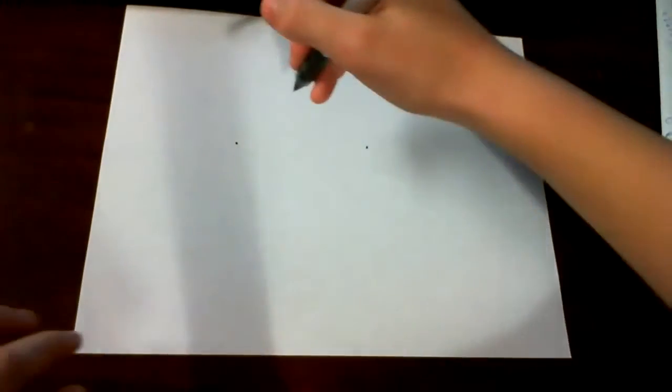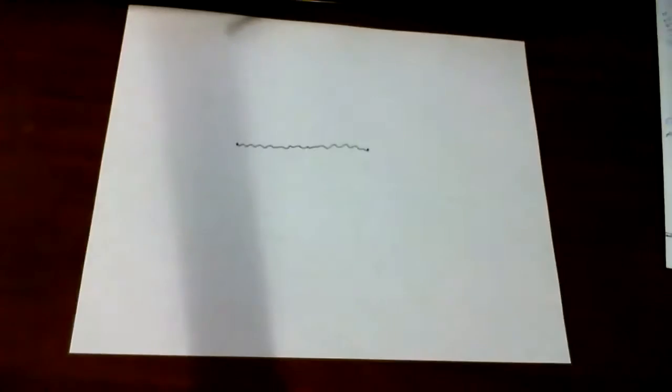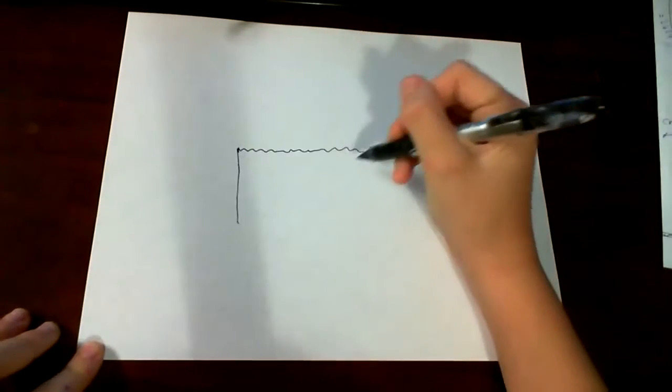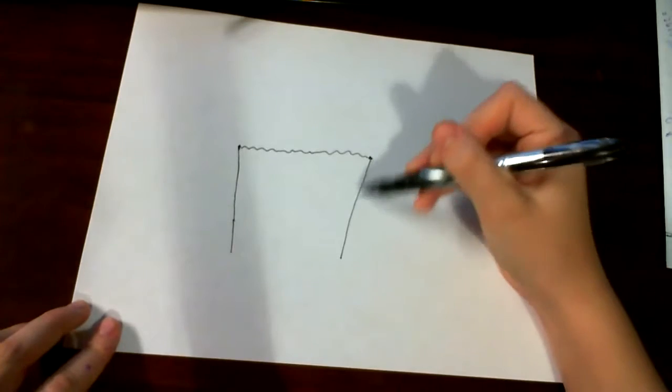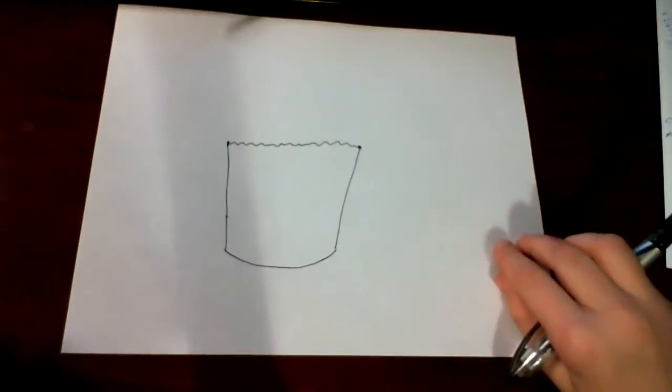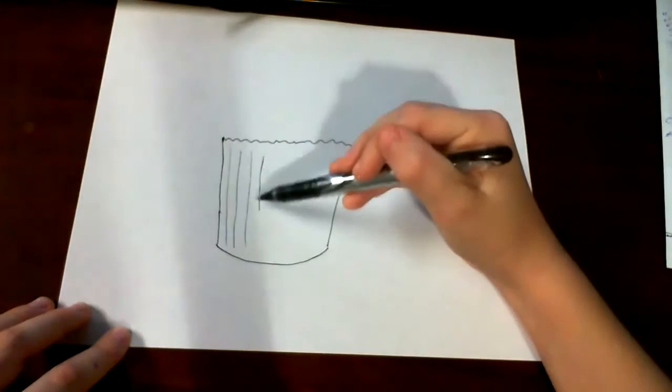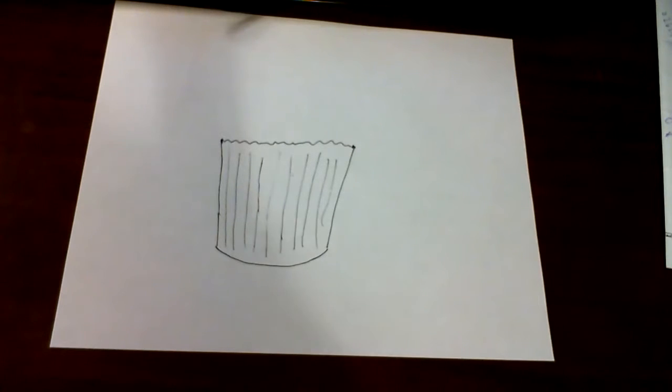So then you go on the dot, on this dot, and then you make a squiggly line and connects to this line. So then you go back to this dot and you go down like that, and then the same thing like this, and you can go slightly inward, and then you can make a slight curvy line right here. And then the final step is you can just make lines like this. You don't have to if you don't want to.